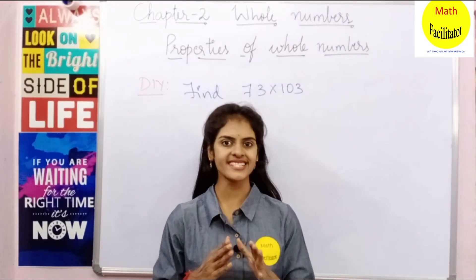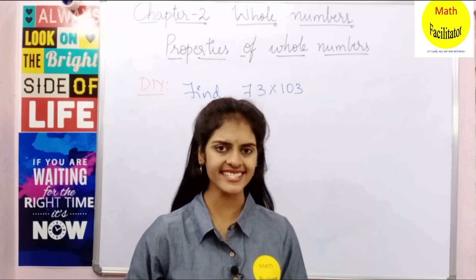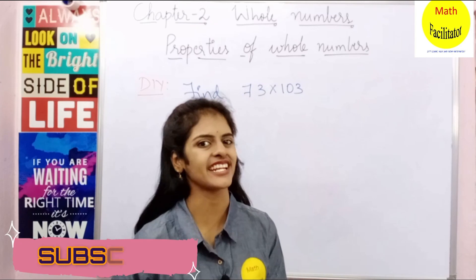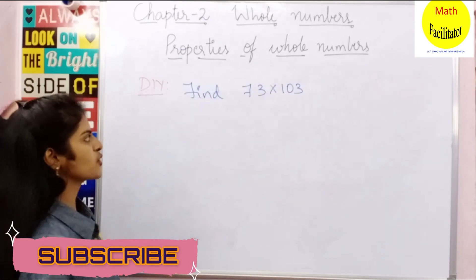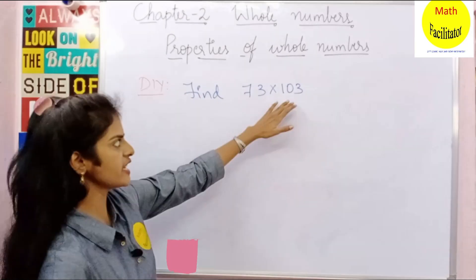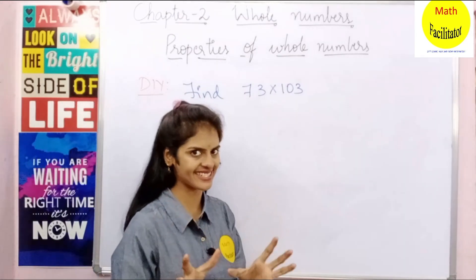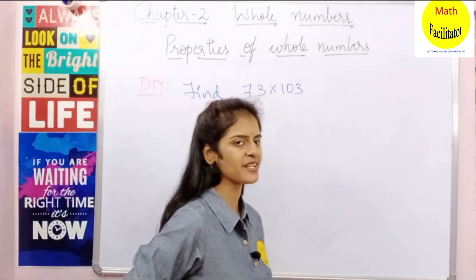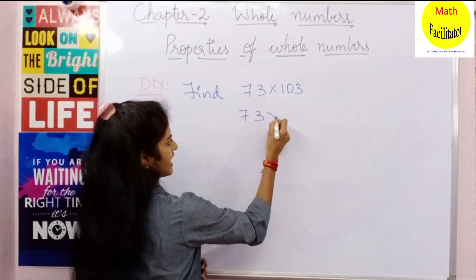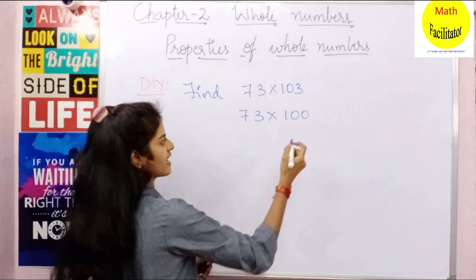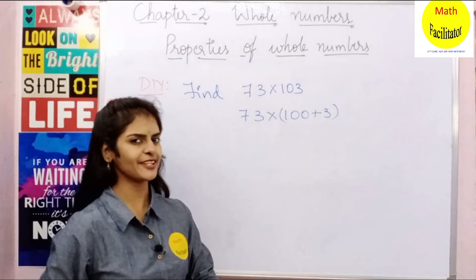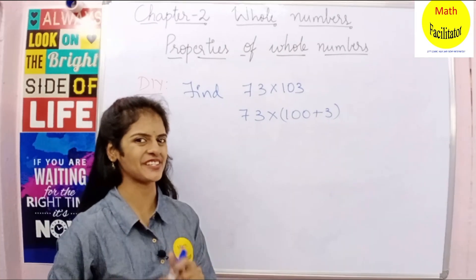As I told you, properties help us in our calculations. Now that you have learnt all the properties, it's your time to check your understanding with our DIY. Find 73 into 103. You can split 103 as 100 plus 3. Which property do you use here? I think you got the property — do it yourself.